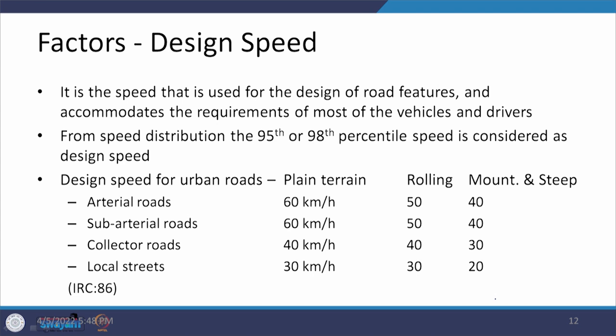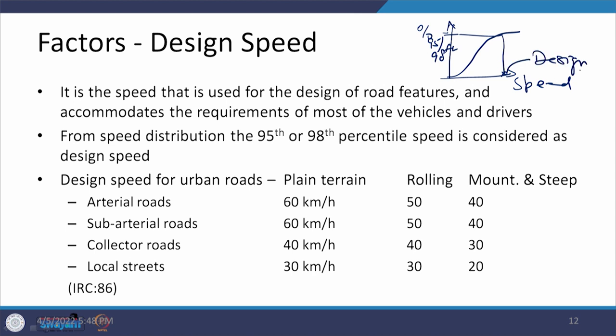The next factor is design speed, one of the most important factors in the design of various facilities because it impacts every design element. For an existing road, you can find the speed of vehicles moving on that road stretch. When the data is plotted with speed on the x-axis and percentage of vehicles on the y-axis as an S-curve, the 95th or 98th percentile value is considered as the design speed.